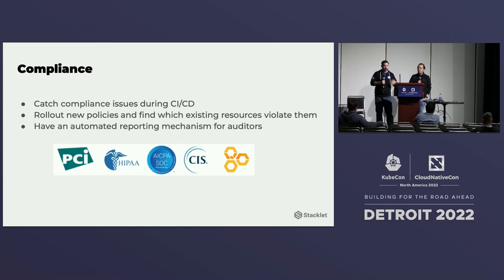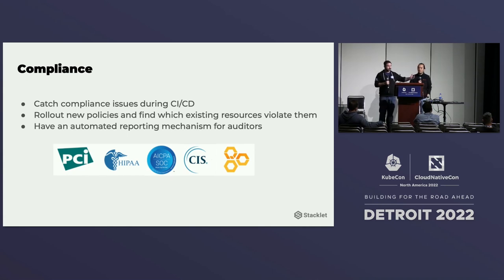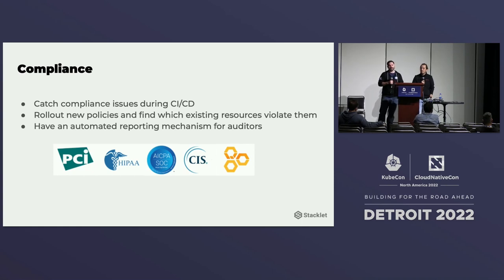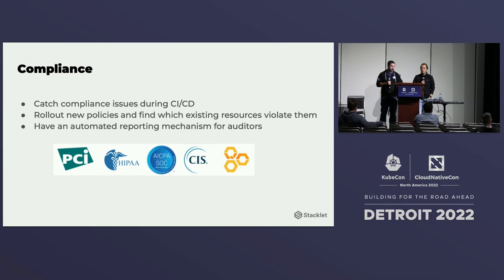The next thing is compliance. Most of us have some type of compliance — PCI, HIPAA, CIS, or similar. When you're doing something like SOC 2 on an annual basis, you want to be checking it throughout the year, because if you just say it's audit time and start gathering evidence, it's going to be really difficult to get that to your auditor. With Cloud Custodian, you can run on an event-based mode or a pull mode, running your SOC 2 policies all the time.